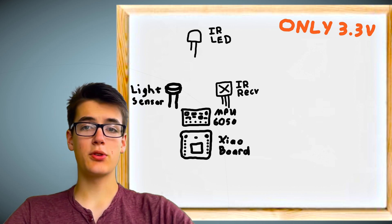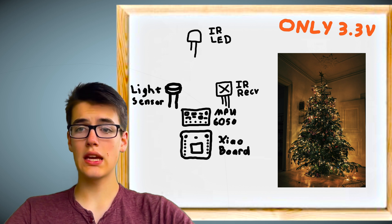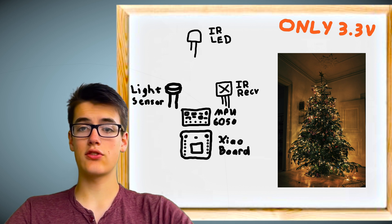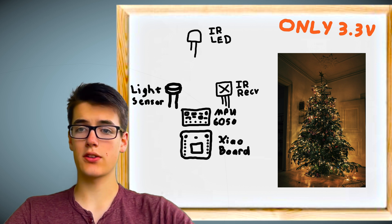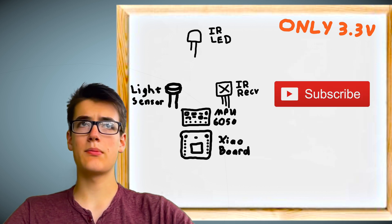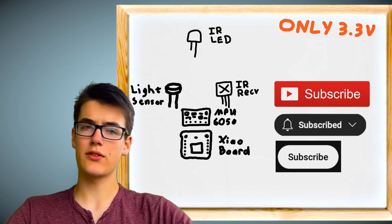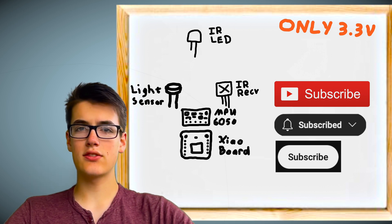For example, if I want to control this Christmas tree, I can have the clockwise gesture set it to multicolored mode and the counterclockwise gesture set it to my favorite color, red—also the color of the subscribe button. Except now it's gray or white or something. Anyway, just make sure to hit it so you don't miss the rest of the sonic series.